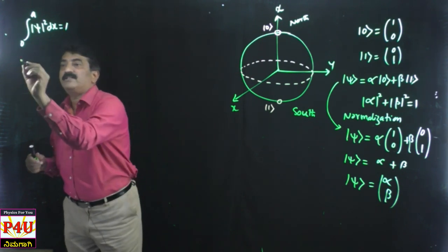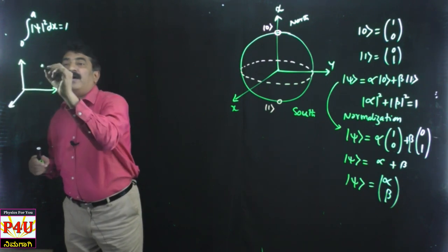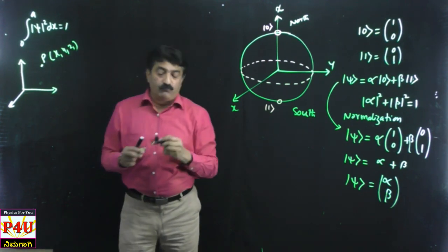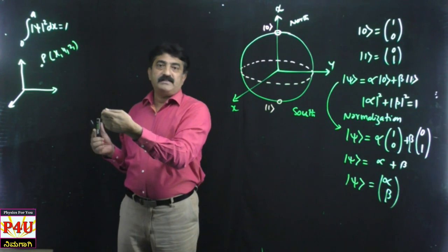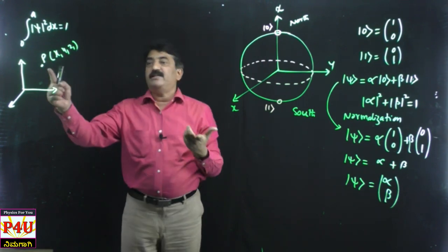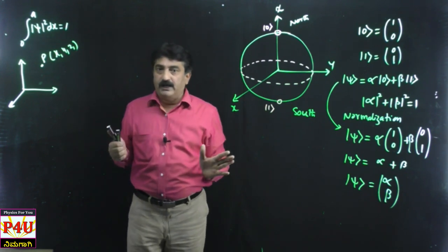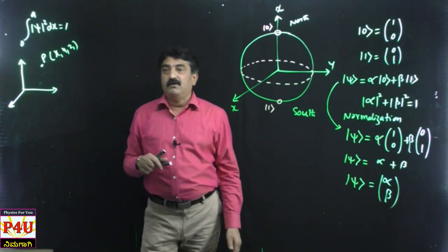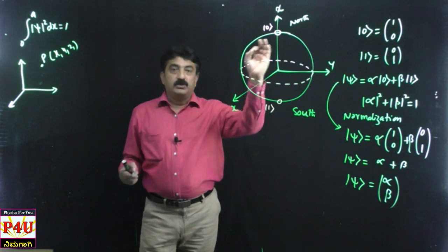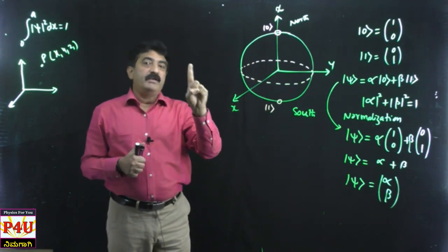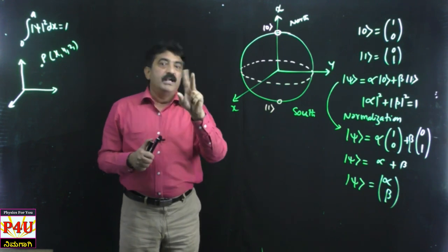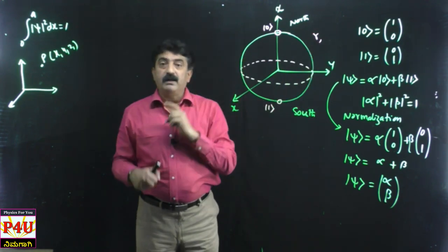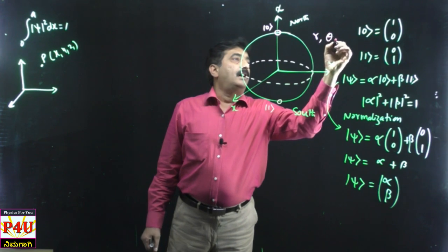Consider a Cartesian coordinate system. I have a point P with coordinates x1, y1, z1. You move x1 along the x-axis, y1 along the y-axis, z1 along the z-axis — you get that point. So it locates the particle using 3 coordinates. In spherical coordinates, there are also 3 parameters: radius r is linear, and the remaining two — theta and phi — are angular quantities. These are called spherical coordinates, represented by r, theta, and phi.